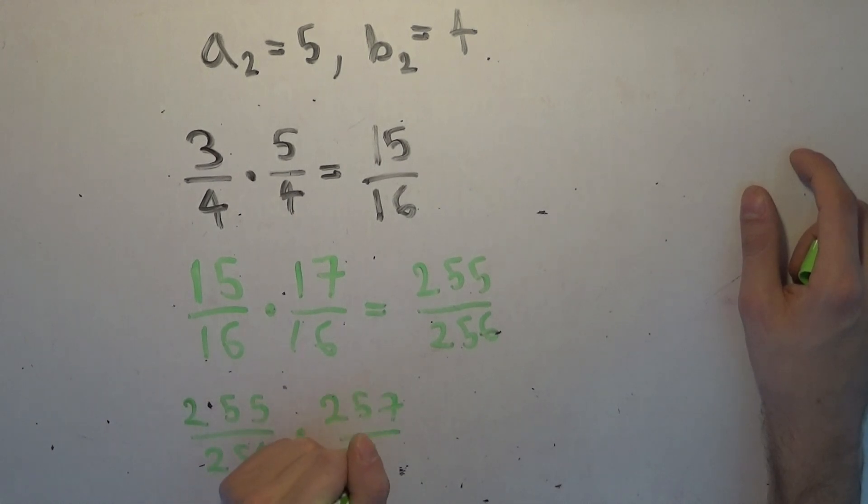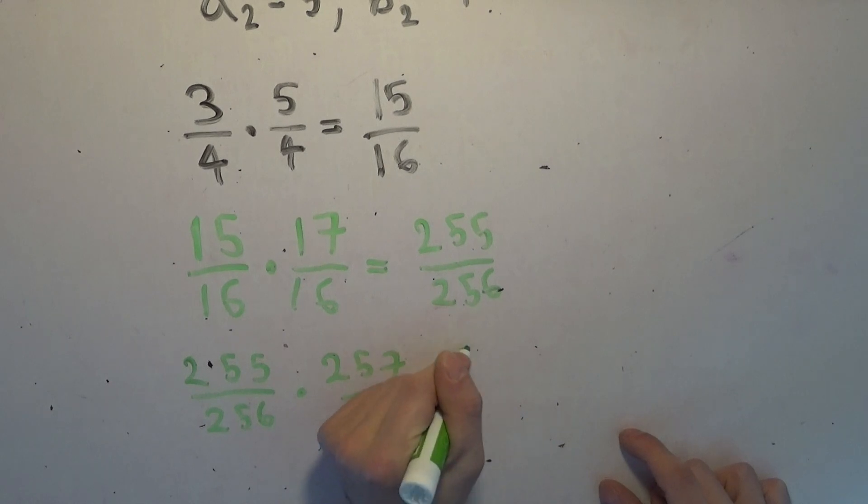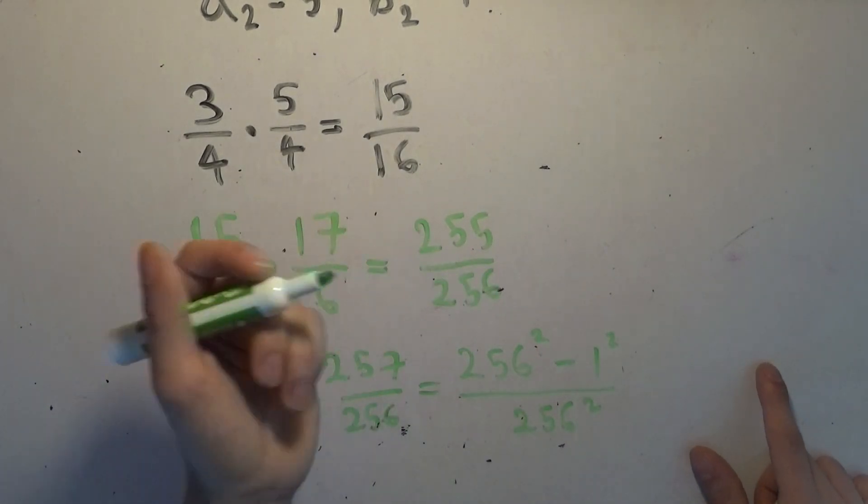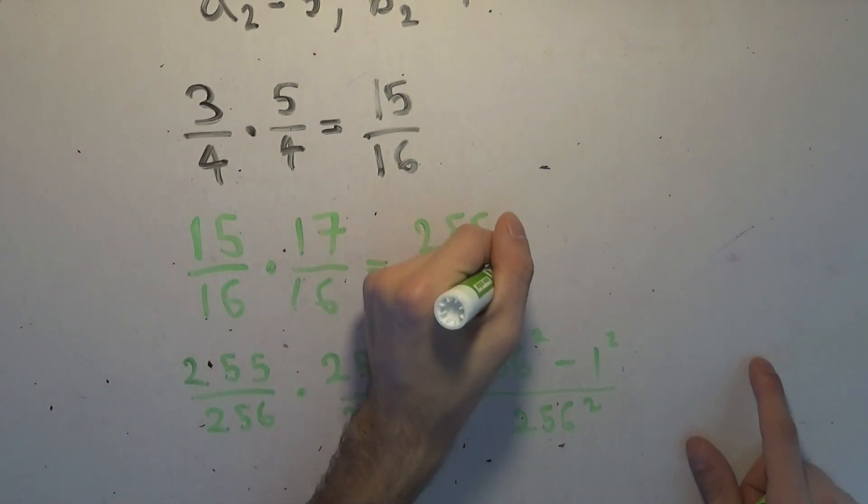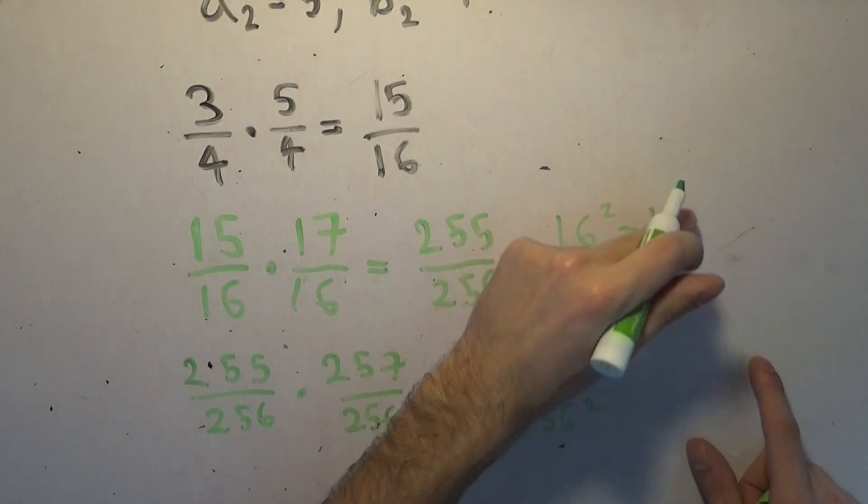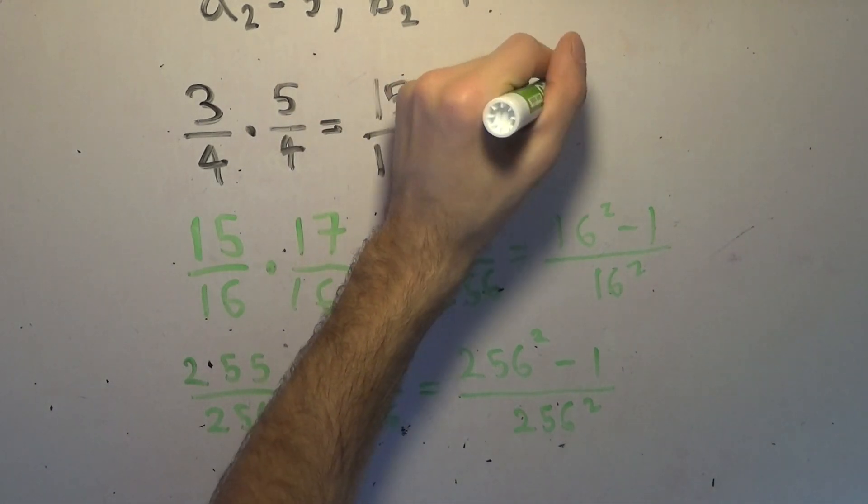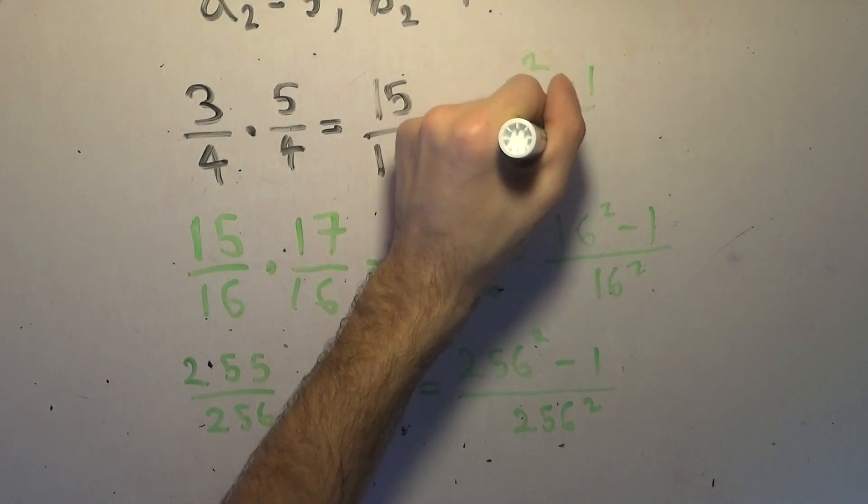Consider this term and simply multiply it by a number with the same denominator but two more in the numerator. So we get 255 over 256 times 257 over 256. Now I'm not going to do this, but I think you can see what's actually going on here. This is exactly equal to 256 minus 1 times 256 plus 1, which is going to give a difference of squares, which is 256 squared minus 1 squared all divided by 256 squared.